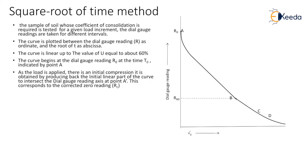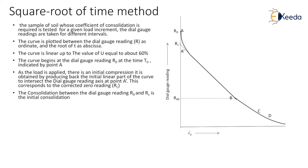Producing back the linear part of the curve, it intersects the dial gauge reading axis at point A dash, corresponding to the corrected zero reading, indicated as RC. The consolidation between dial gauge reading R0 and RC is the initial consolidation — from the very first reading R0 to RC indicates initial consolidation. After that, primary consolidation starts.